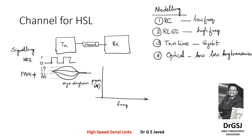An S-parameter simulation is performed to obtain frequency response information. For a two-port model, you have one port, a second port, and a common port. In this two-port model, the S-parameter gain will be from the input to the output and output to the input — symmetric.